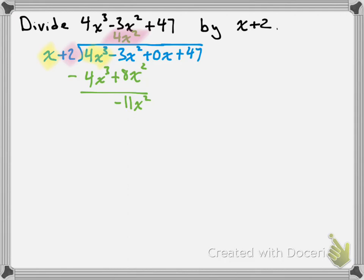Now that we have negative 11x squared, we carry down the next term, the plus 0x. We repeat the process and ask: what times x is equal to negative 11x squared? Negative 11x times x gives us negative 11x squared, so we place negative 11x up top. Then we multiply the plus 2 in our binomial by negative 11x, which gives us negative 22x. We subtract: negative 11x squared minus negative 11x squared cancels, and 0x minus negative 22x gives us 22x.